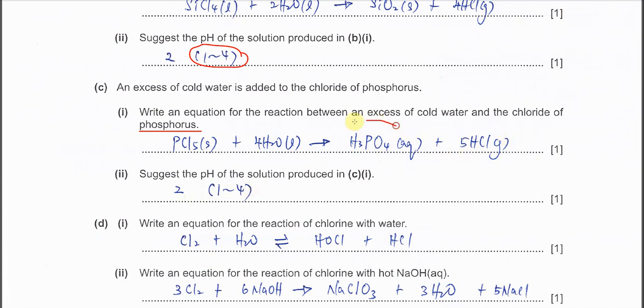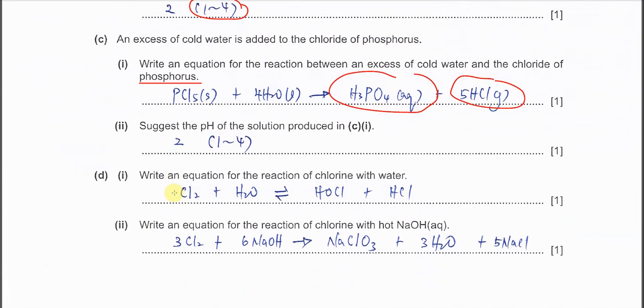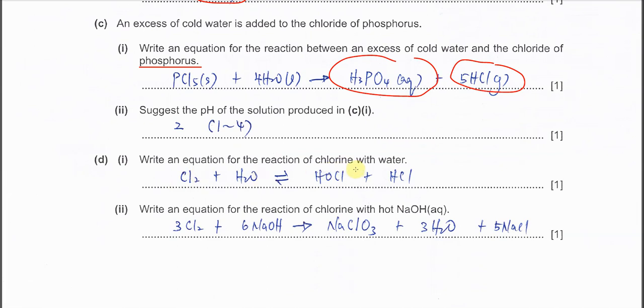Suggest the pH. Because two acids form, you can put 1 or 2, as long as within pH 1 to 4. Of course pH 1 or 2 is a better answer. Part D1: write an equation for the reaction of chlorine with water. This is very easy, so it will form HOCl, the hypochlorous acid, and hydrochloric acid HCl. It will form an equilibrium.